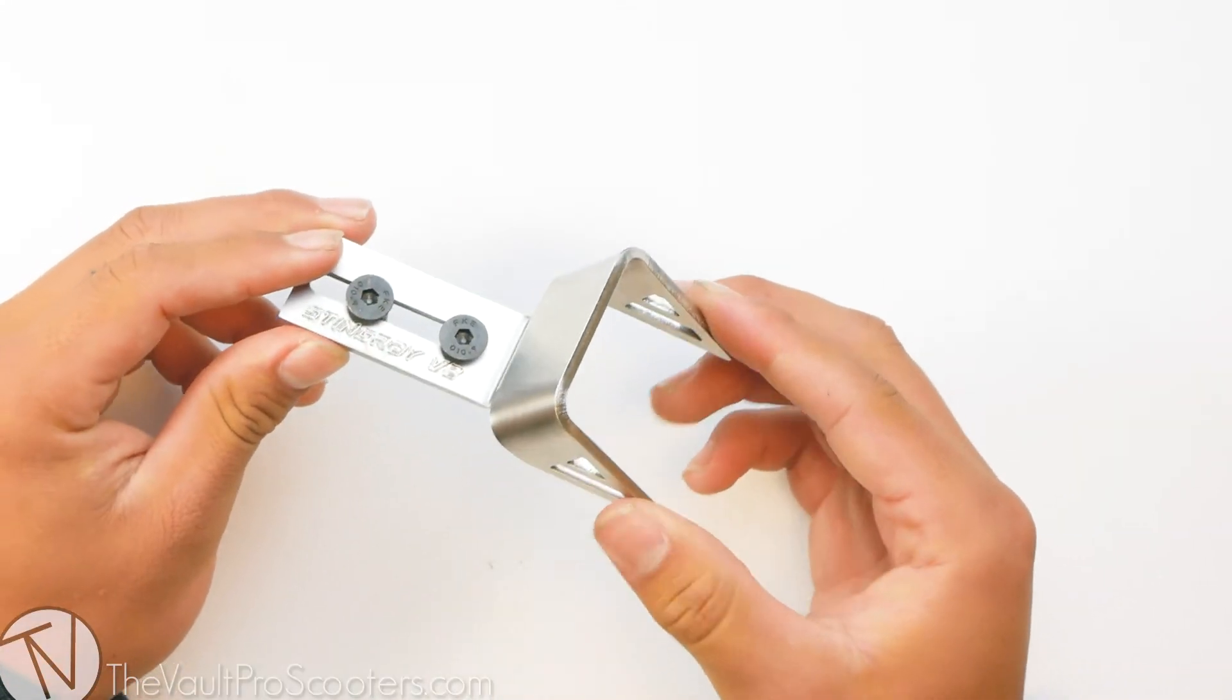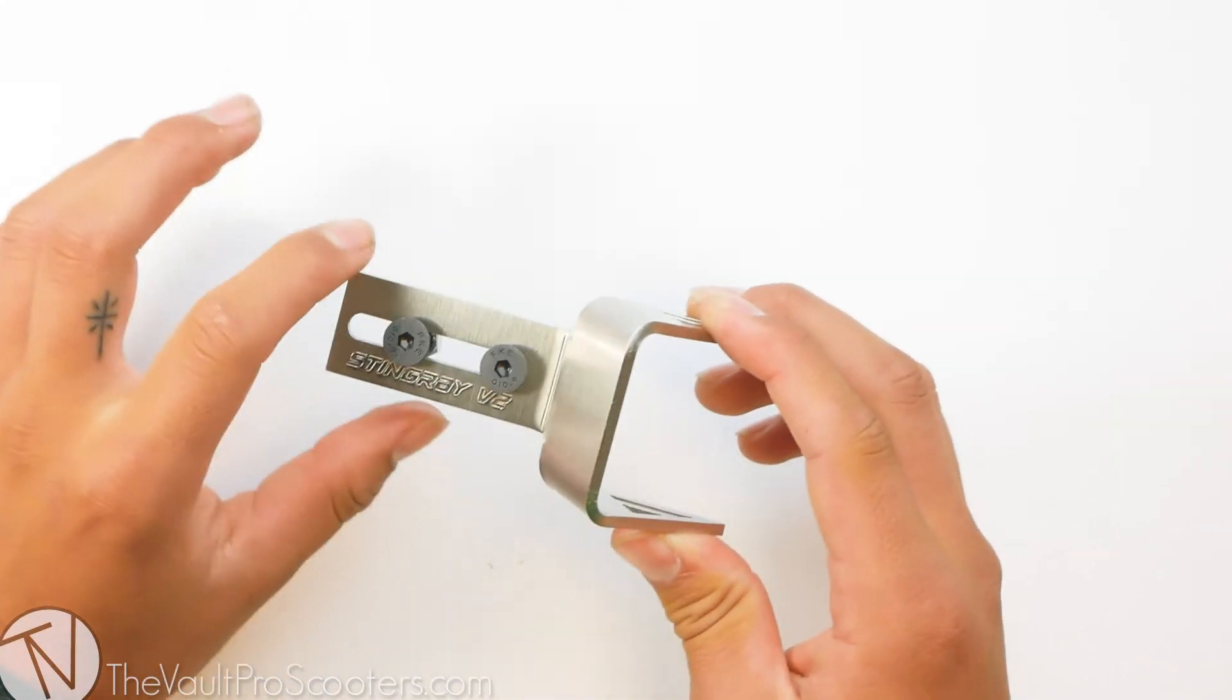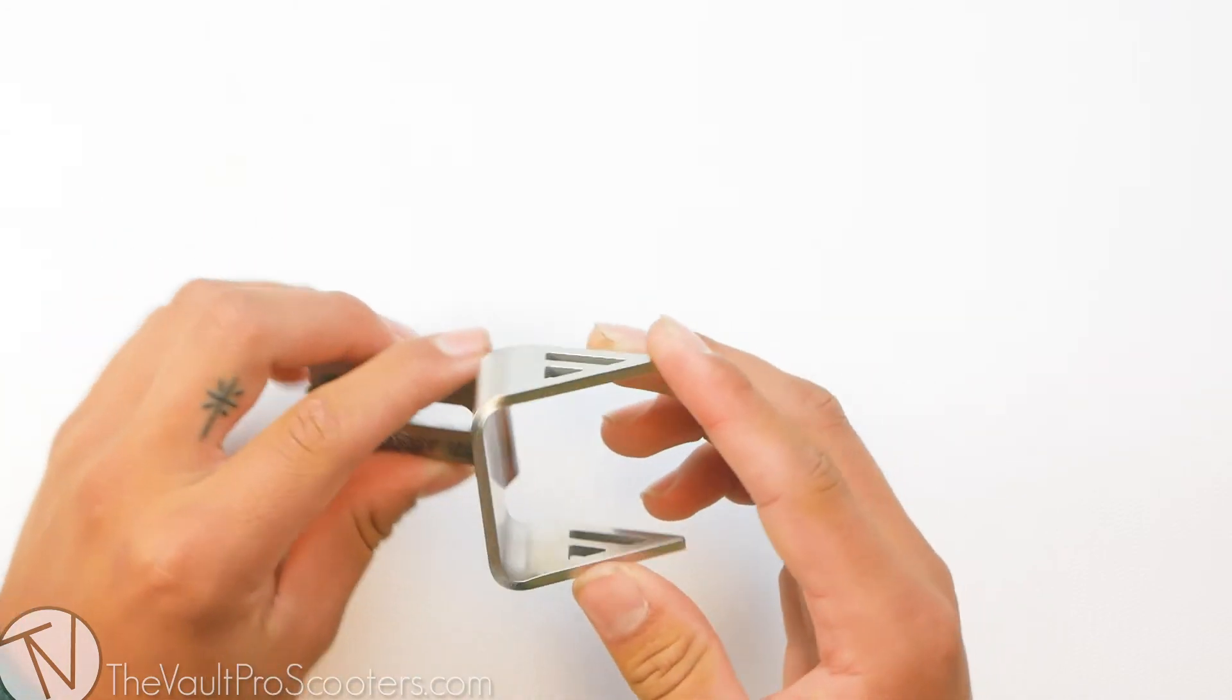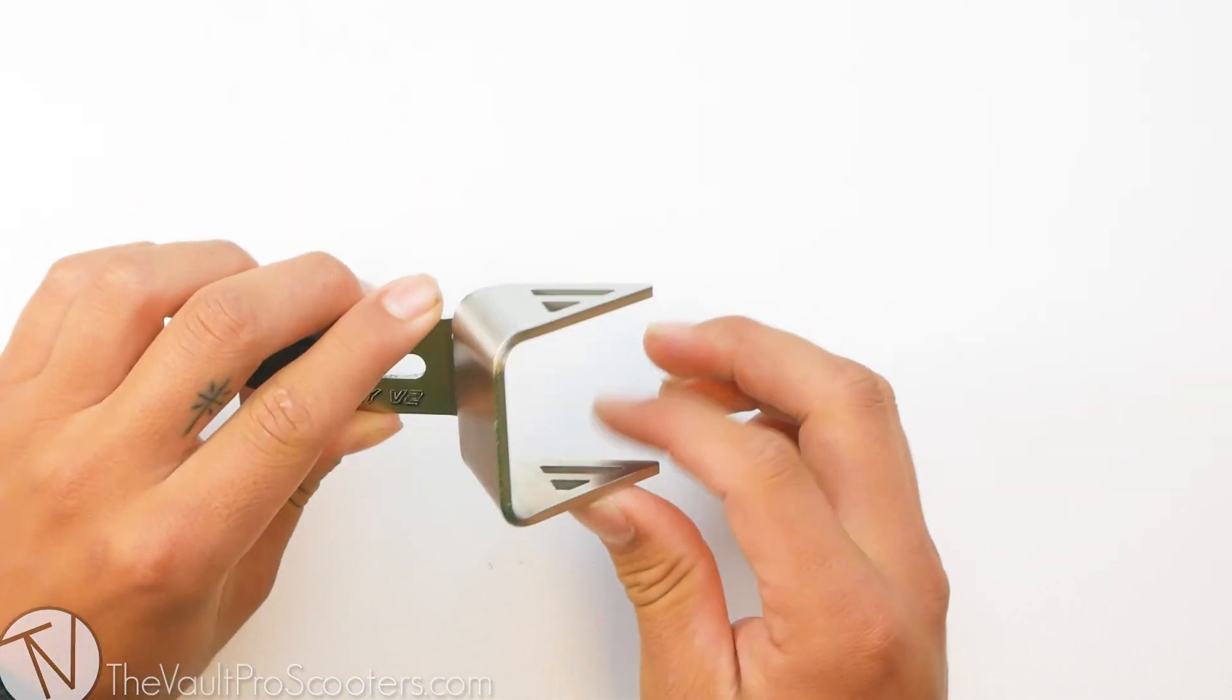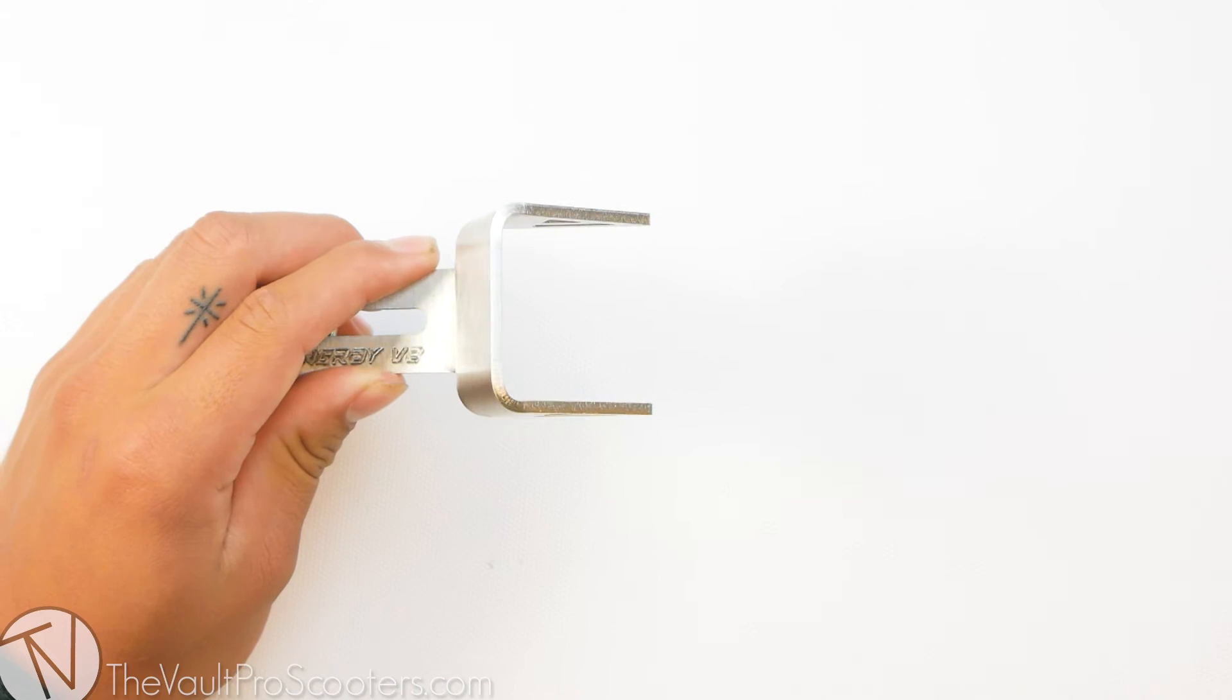The Stingray fender has a really nice and sleek look to it. It has the cutout where the bolts are and on the sides of the wings it has cutouts which is going to allow it to be lighter. Let's see where it sits on the scale.